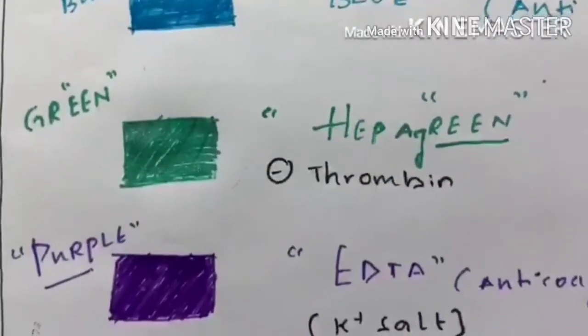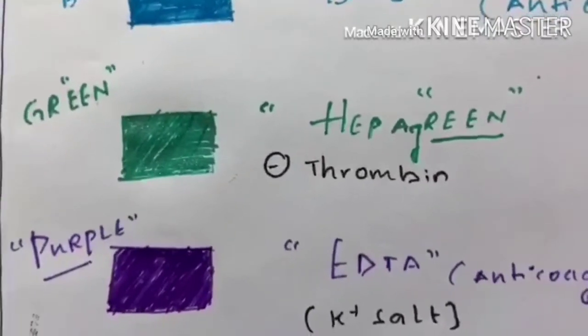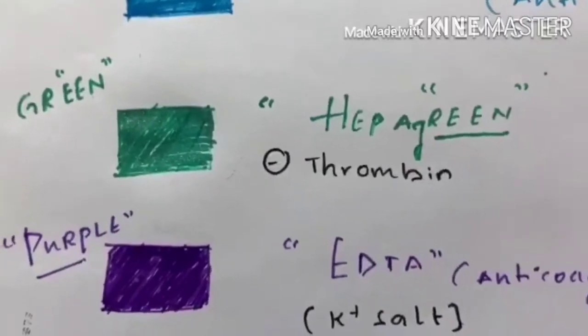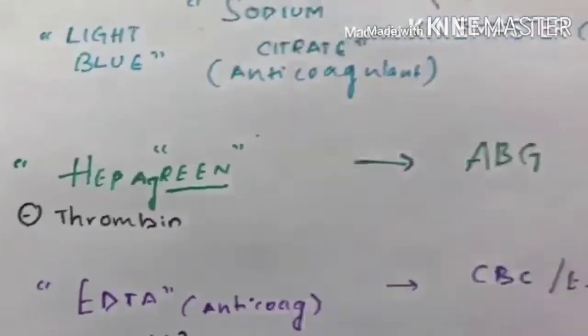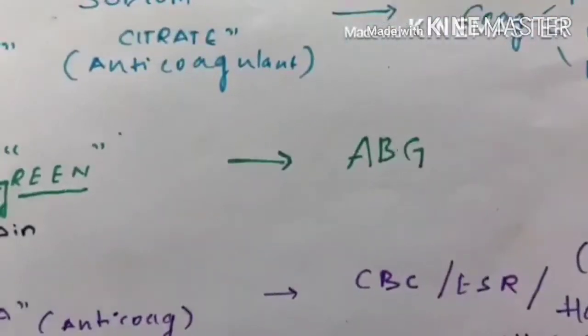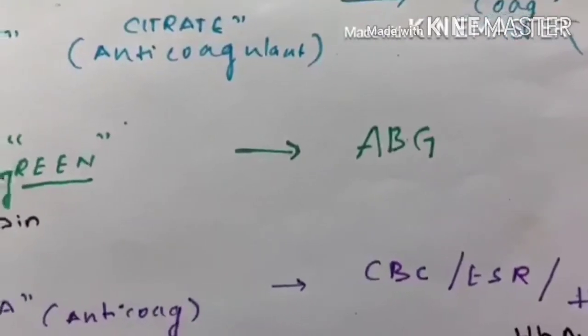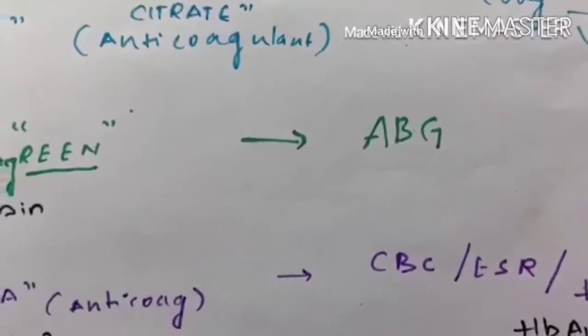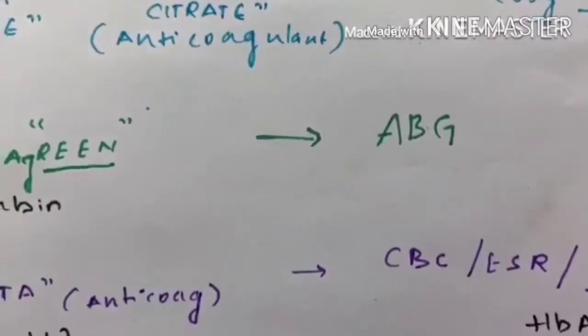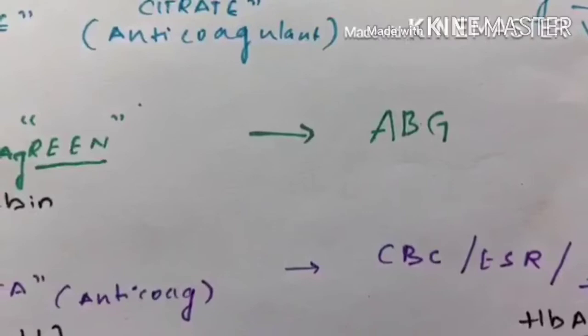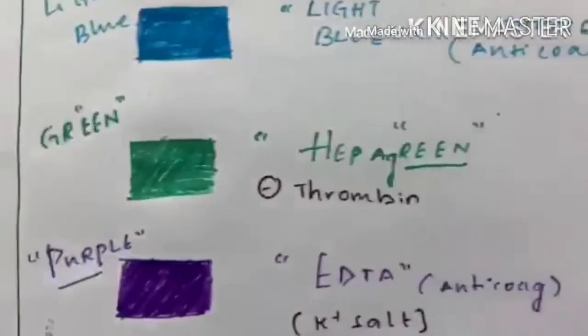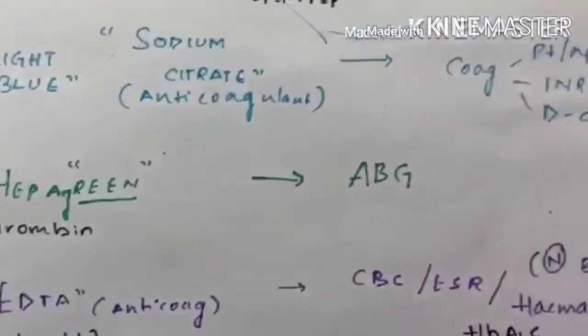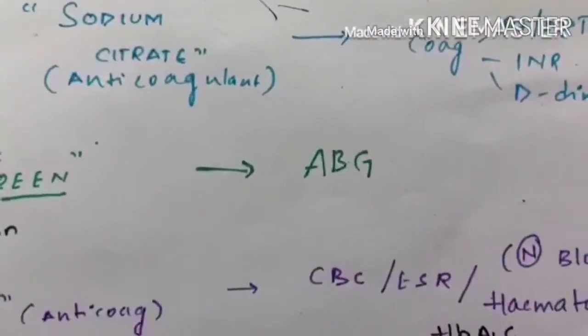Now coming to green bottle. This green bottle contains heparin. We remember heparin as heparin green. This is useful for arterial blood gas analysis. We all know from our internship for drawing ABG, we used to draw heparin in a syringe and then collect ABG. So remembering use is not a problem but color is a problem. To remember the color, green bottle contains hepagreen, useful for ABG analysis.